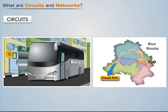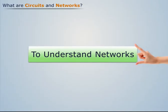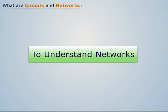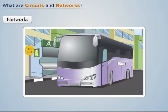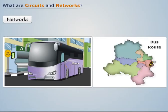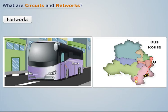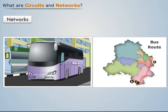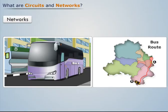Now let's understand networks. Consider another bus which starts from point A. This bus travels along a route and reaches point B, but does not return to its starting point. We see that the bus travels along an unclosed path, thus we can say that the route is an example of a network, as it forms an unclosed path.